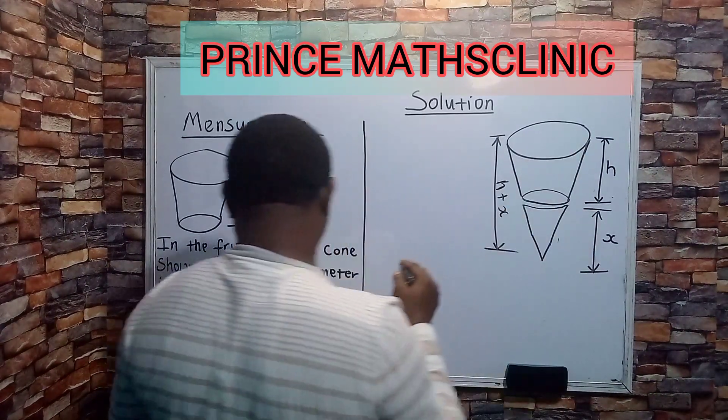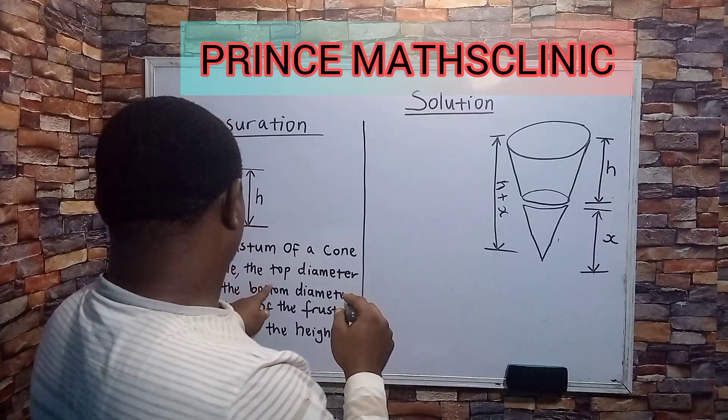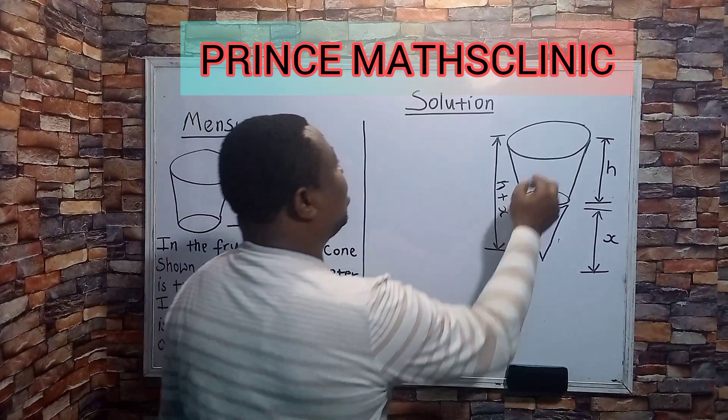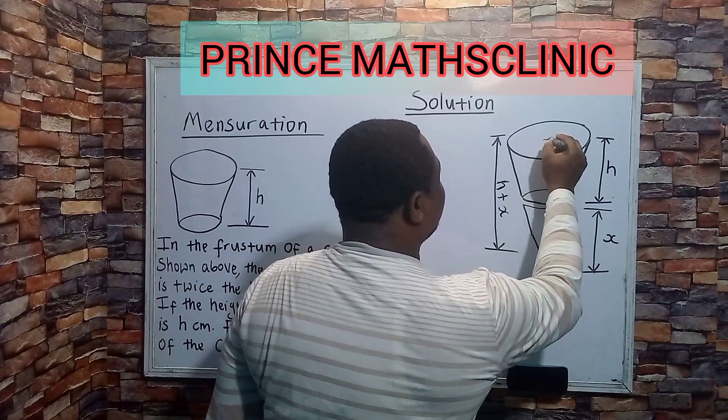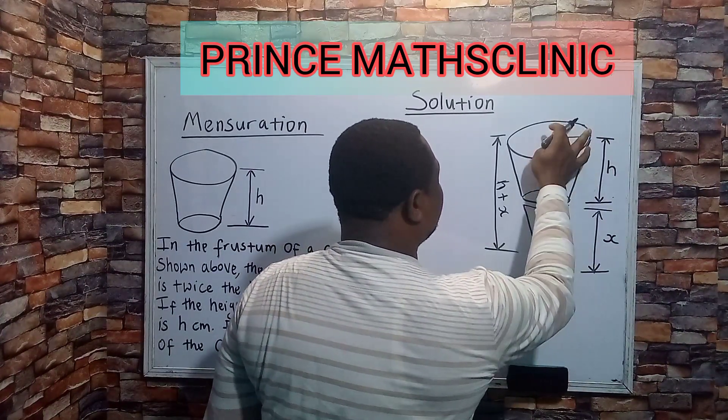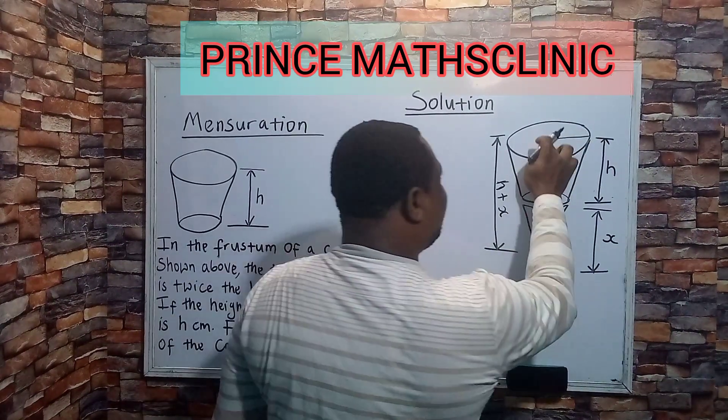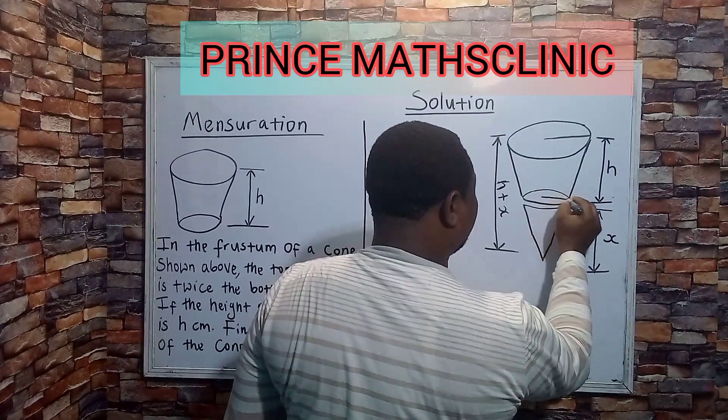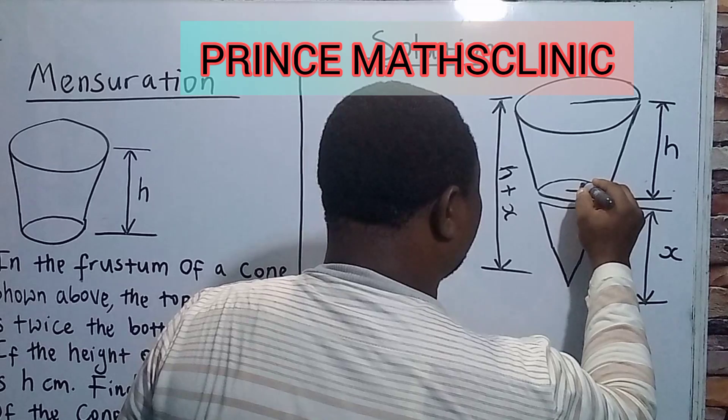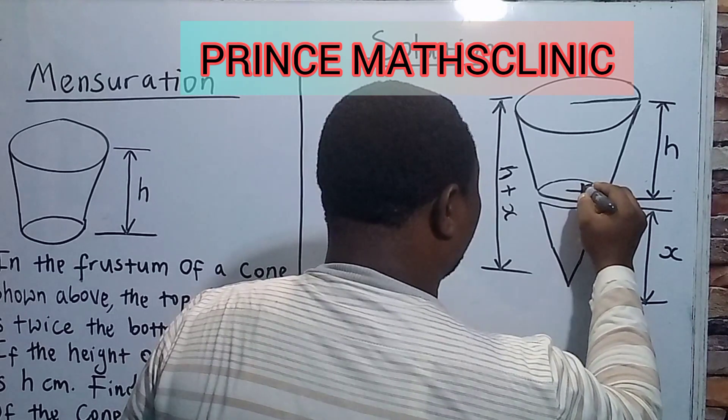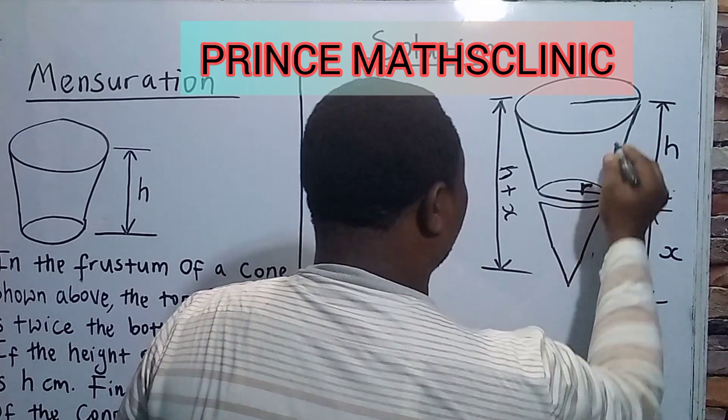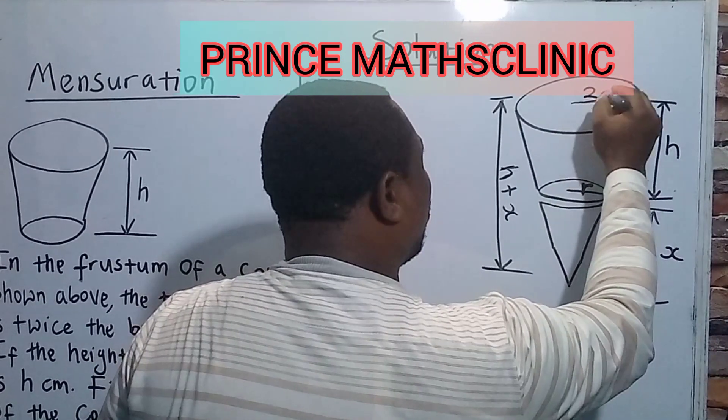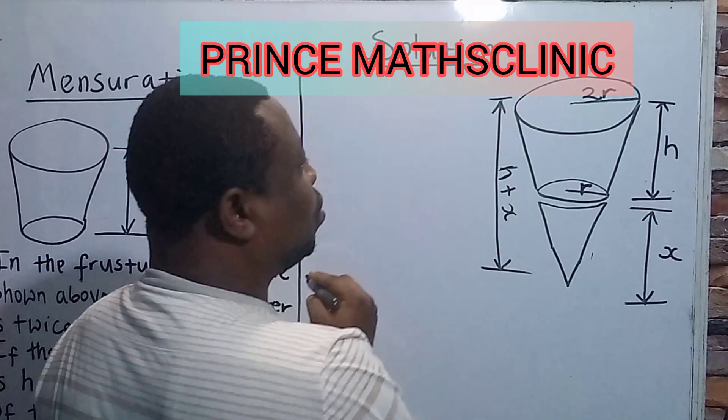Now, the question says that the top diameter is twice the bottom diameter. That means this - if this is two times of this, so if the radius of this and this, for instance, so let us call the radius of this small r. Then this is double of this, so this becomes what? 2r.